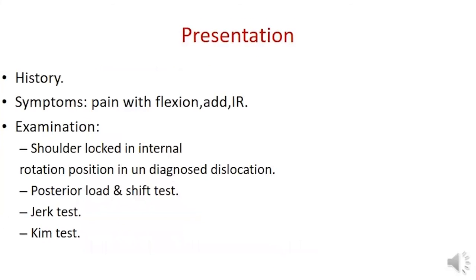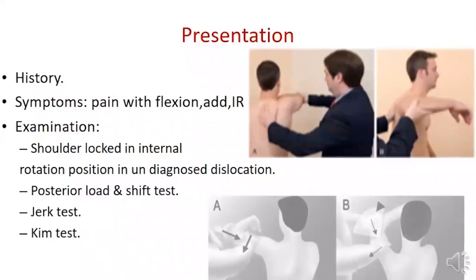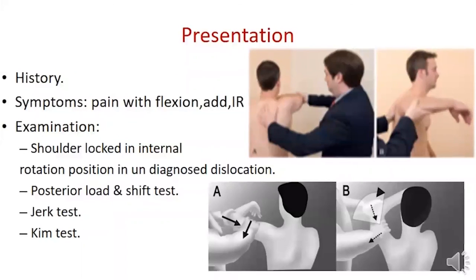The patient may present with history of trauma, pain with flexion, adduction, and internal rotation. The jerk test is performed by placing the arm at 90 degrees of abduction and internal rotation with the elbow bent, applying an axial force along the humerus and abducting into forward flexion — a clunk is positive for posterior subluxation. The Kim test is performed with the patient seated, arm at 90 degrees of abduction, then flexed to 45 degrees forward flexion while simultaneously applying axial load on the elbow and a posterior-inferior force on the upper humerus — positive when pain is present.